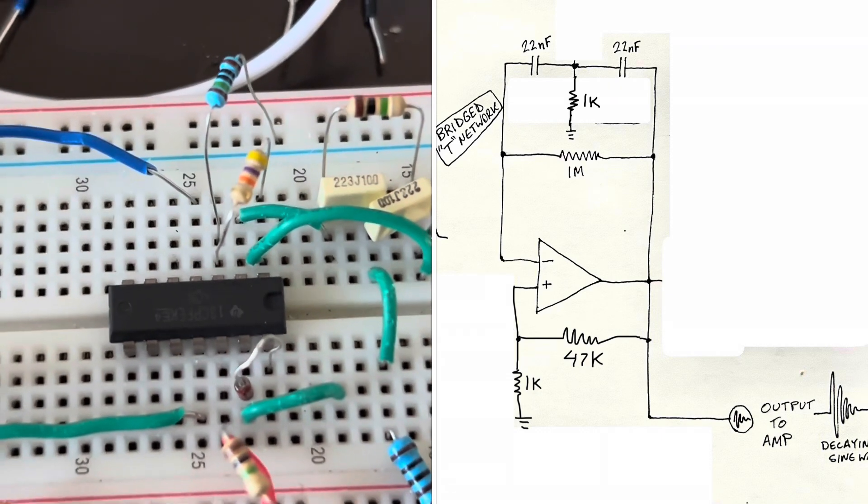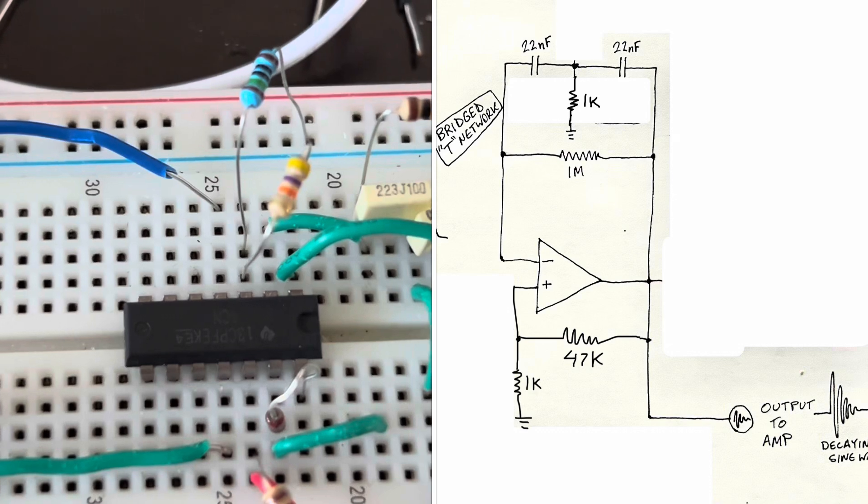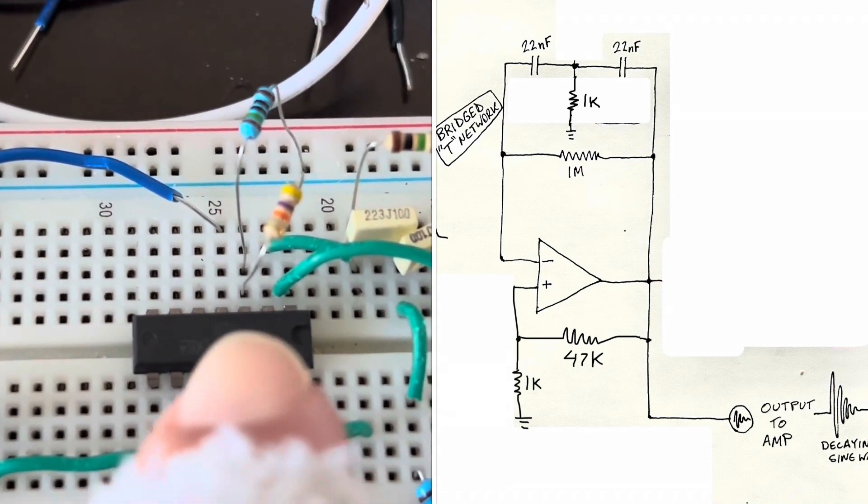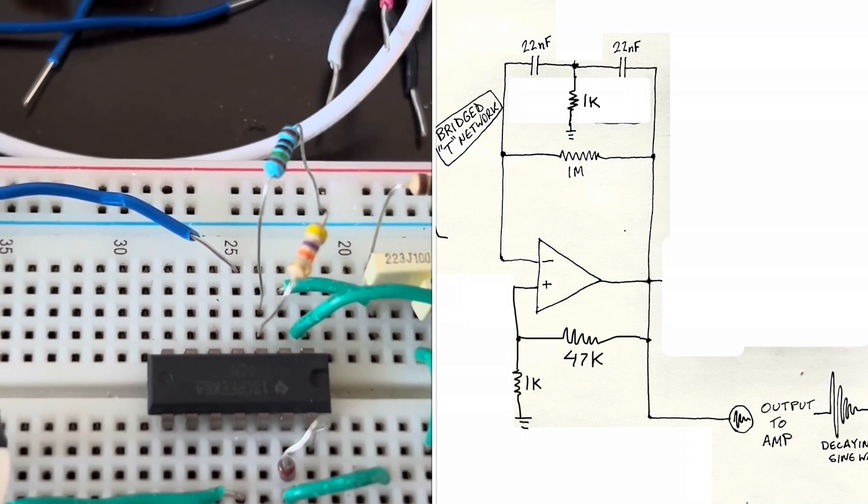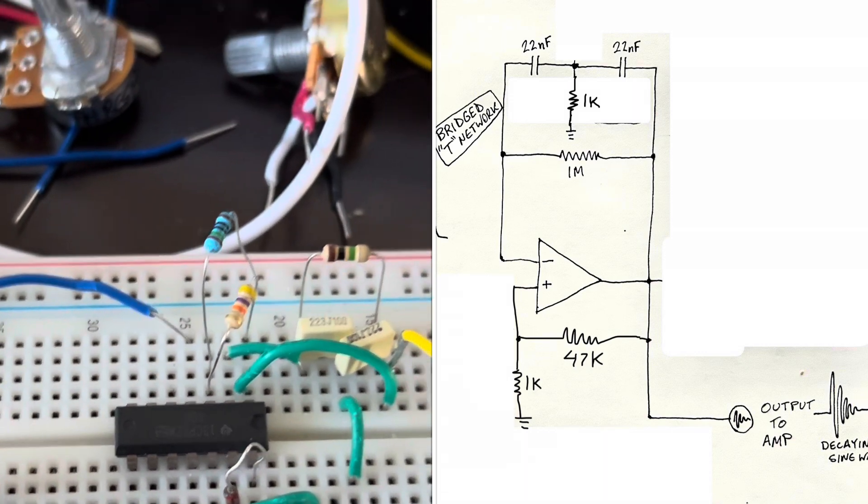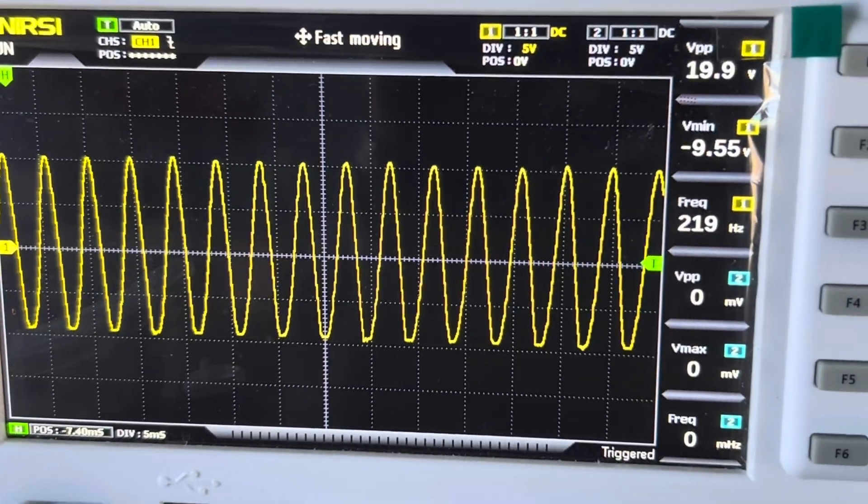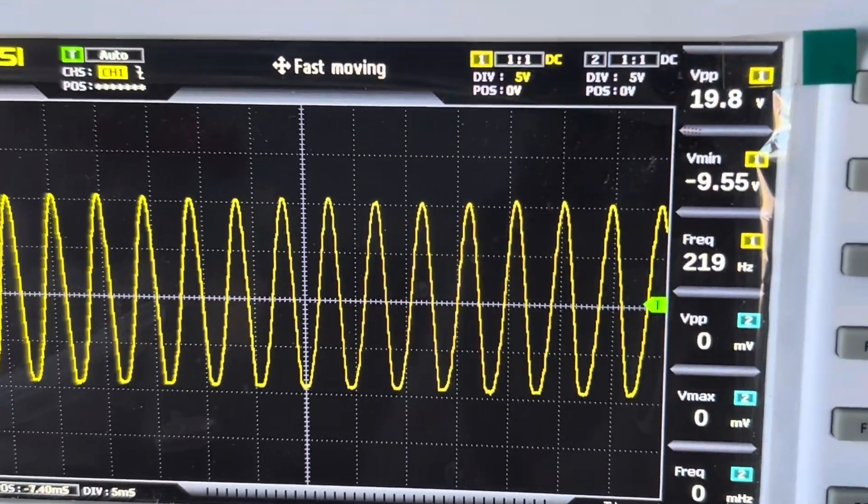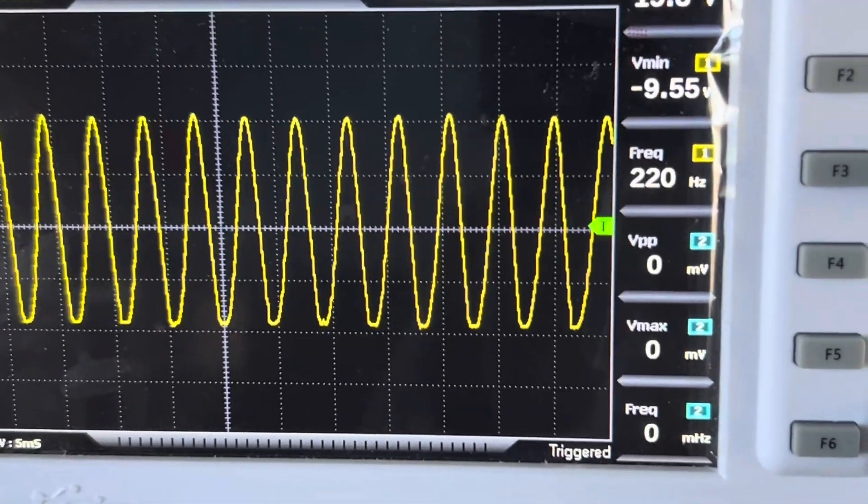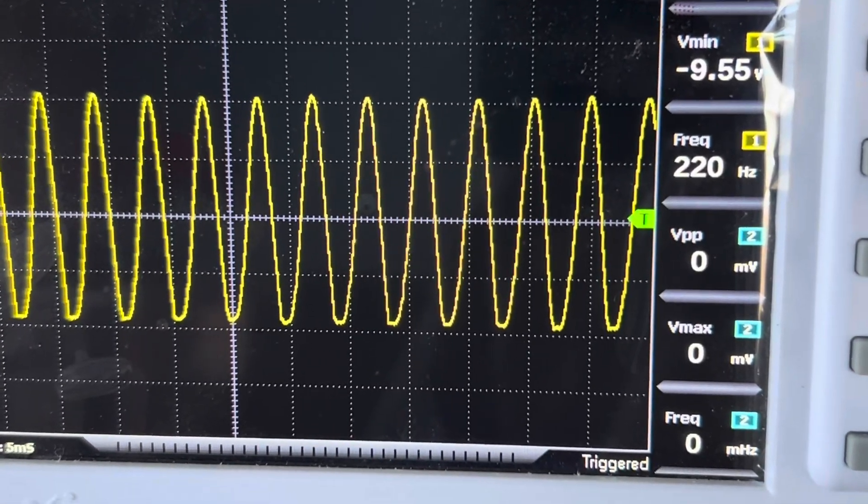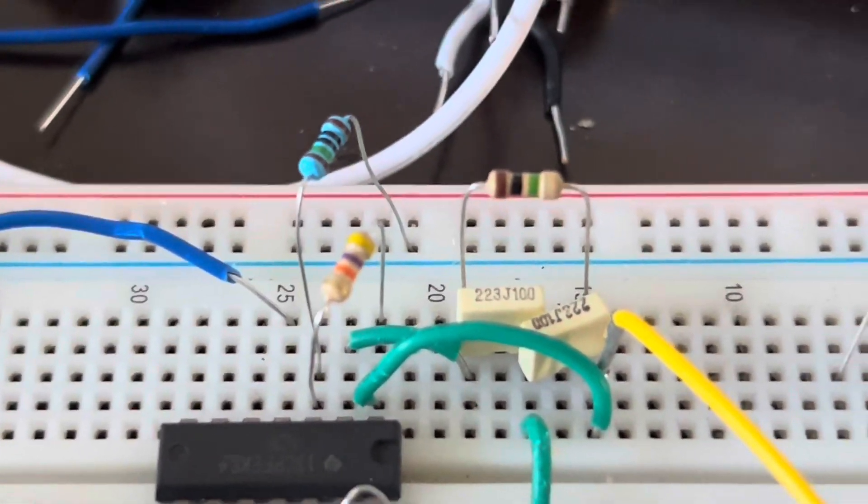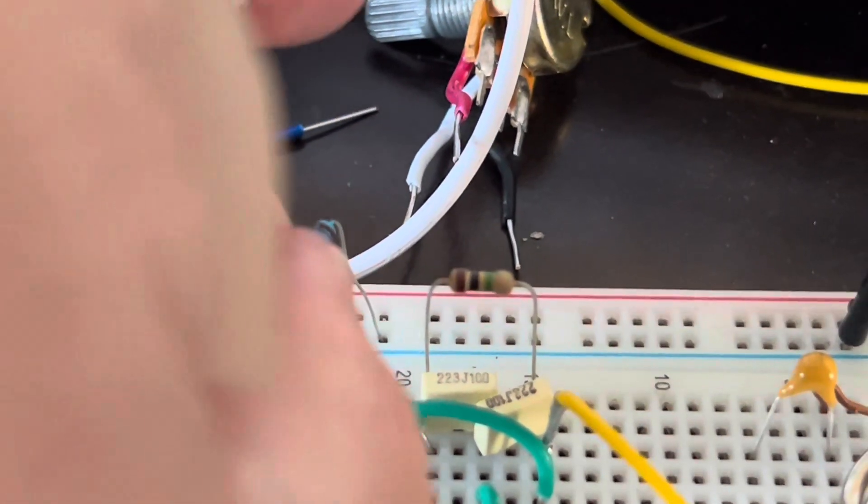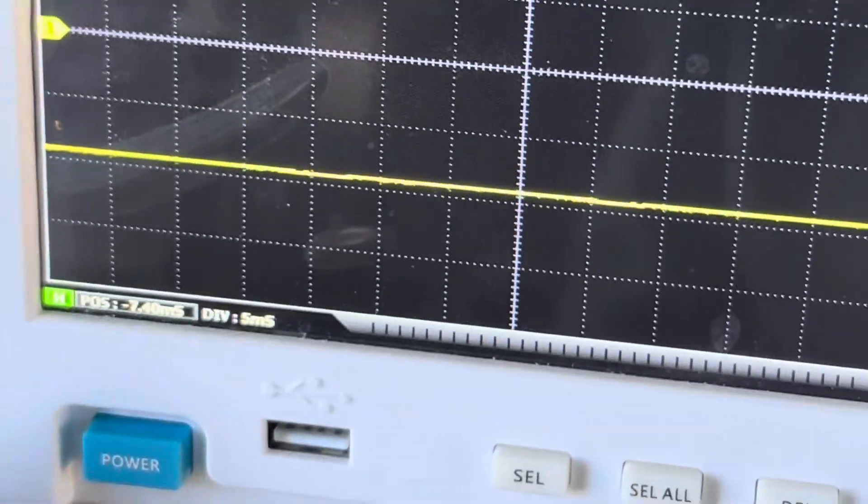Now, if you put a positive feedback into it, like with this 47k resistor and a 1k resistor to ground, you get a stable sine wave that is at 19 volts peak to peak. And it's a very steady sine wave at 220 hertz based on this set of discrete components. And so if you take away the positive feedback, you don't have anything.